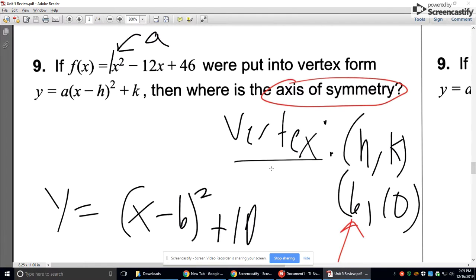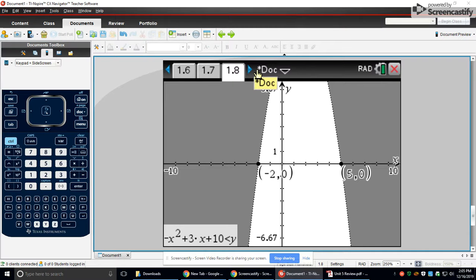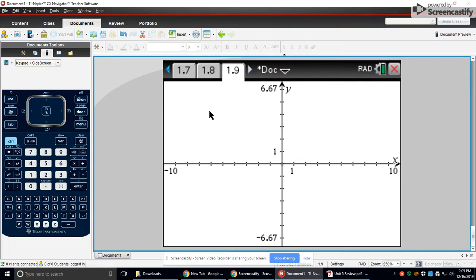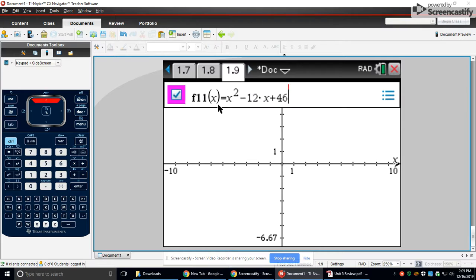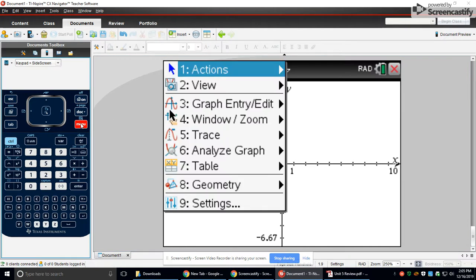So anyway, number 9. If you were to put it in vertex form, what's the axis of symmetry? The quickest and easiest way to do this is to graph this. All right? And I'll explain to you all the other stuff. But just graph x squared minus 12x plus 46. So I have that typed in. And it's typed in right there. But nothing shows up. So we need to zoom out.